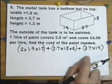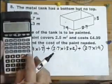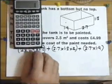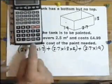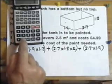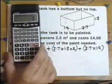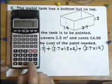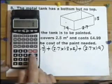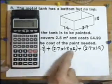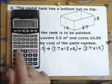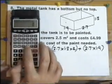Now this you could actually type in the calculator just the way it stands, which is so useful with these sort of type calculators. Let's see if we can do it: open brackets, 2 multiplied by 1.9 multiplied by 1.3 close brackets, plus open brackets 2.7 multiplied by 1.3 close brackets, close brackets, plus open brackets 2.7 multiplied by 1.9 close brackets, equals.